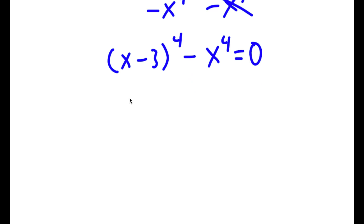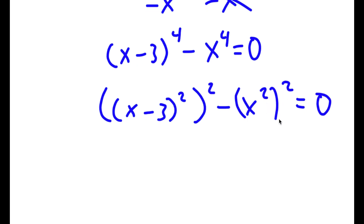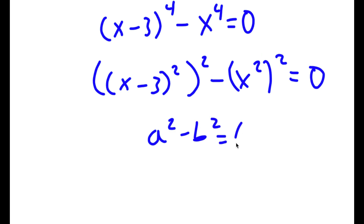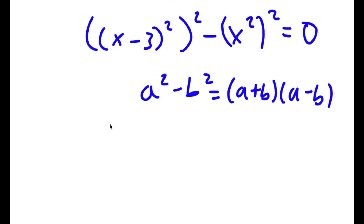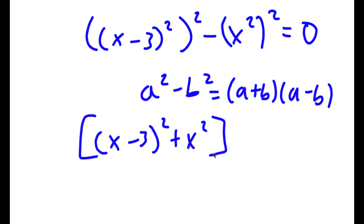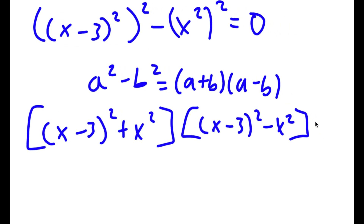I'm going to rewrite this as (x minus 3) squared to the power of 2 minus x squared to the power of 2 is equal to 0. And if I have something in the form a squared minus b squared, this is equal to a plus b times a minus b. So this is going to equal [(x minus 3) squared plus x squared] times [(x minus 3) squared minus x squared] is equal to 0.